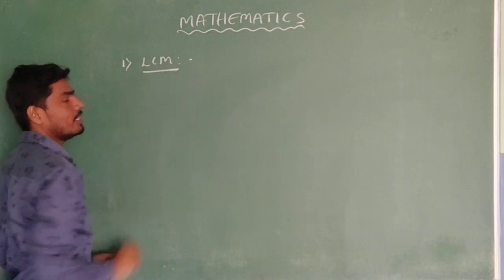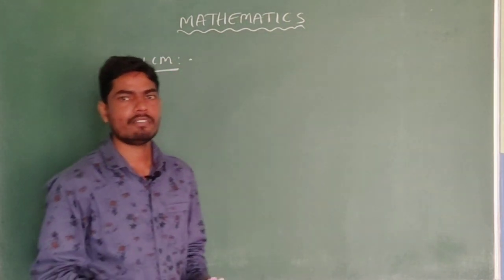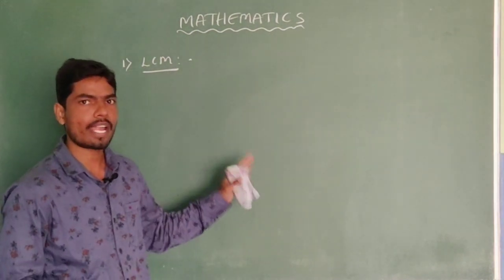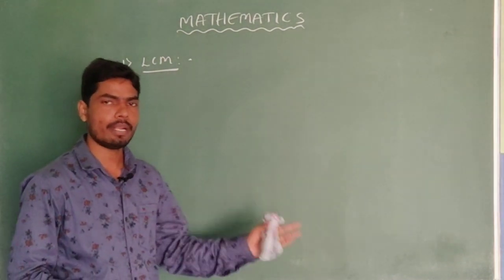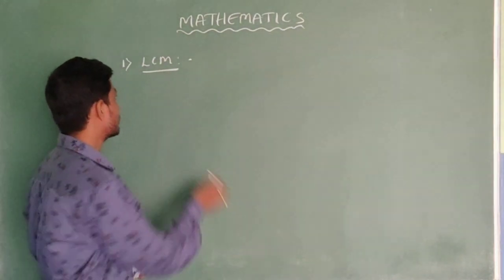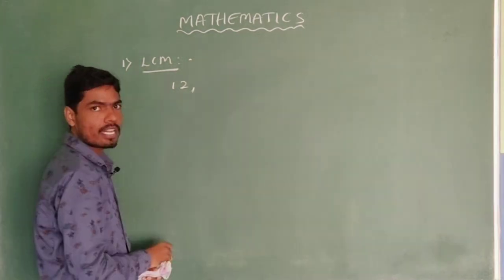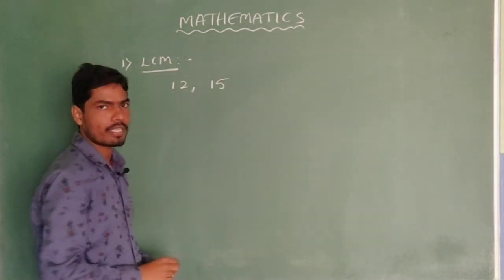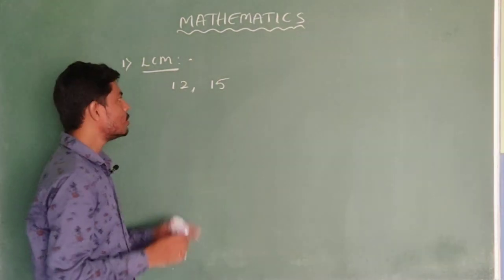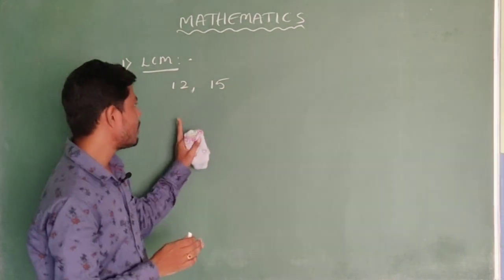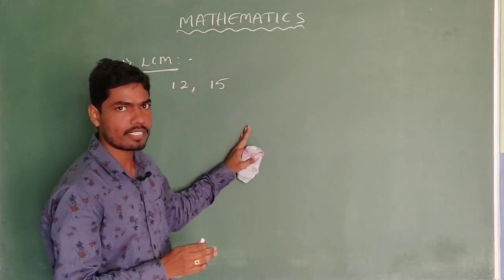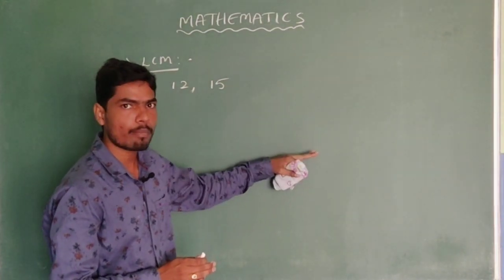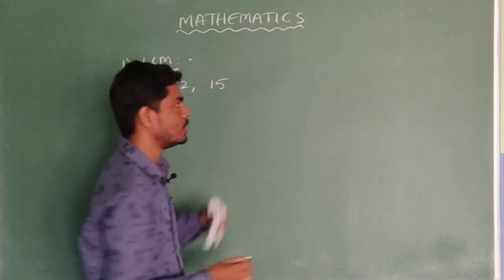LCM is one of the major parts we deal with in mathematics. So how do we find the LCM between two numbers? For example, 12 is a number and 15 is another number. To find the LCM between these two numbers, first we need to know about prime factorization.